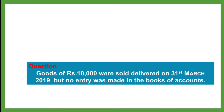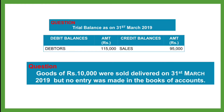Let us see how a question can be asked on it. In a trial balance, debit side data and credit side sales amount figures are given. Below the trial balance, there will be an adjustment like this: goods of Rs 10,000 were sold and delivered on 31st March 2019, but no entry was made in the Books of Accounts.